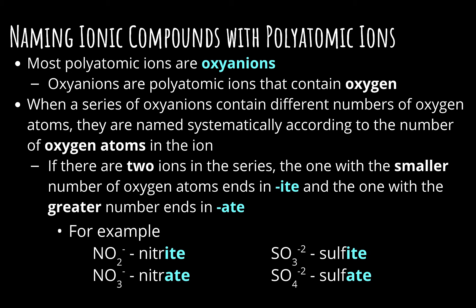If there's two ions in the series, the one with a smaller number of oxygen atoms ends in -ite, and the one with the greater number of oxygen atoms ends in -ate. So for example: NO2- is called nitrite, NO3- is called nitrate; SO3-2 is called sulfite, SO4-2 is called sulfate. The -ite and -ate don't specifically mean a certain number of oxygens — it's the one with the smaller number that gets -ite, and the one with the greater number gets -ate.